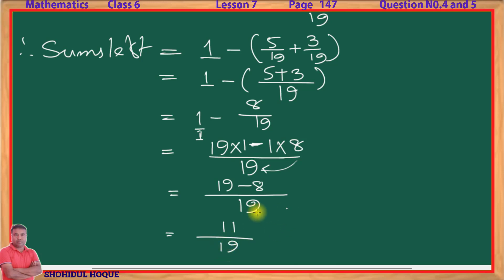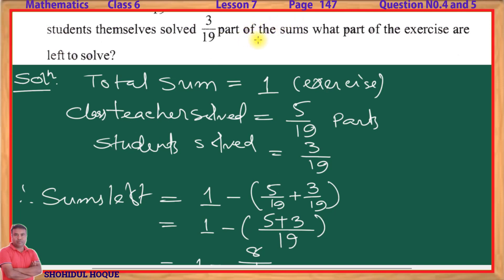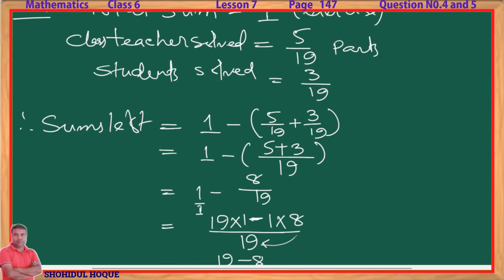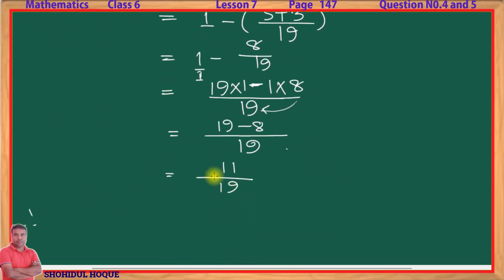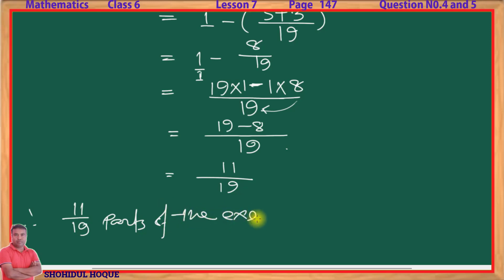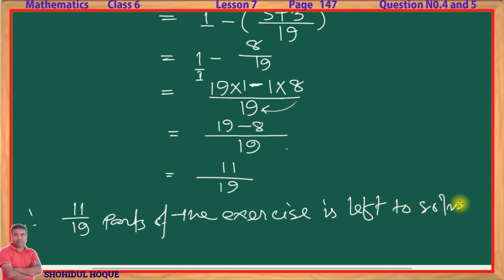So, 19 minus 8 equals 11. Therefore, 11 by 19 parts of the exercise are left to solve. What part of the exercise is left to solve? Therefore, 11 by 19 parts of the exercise is left to solve. See the next video for more.